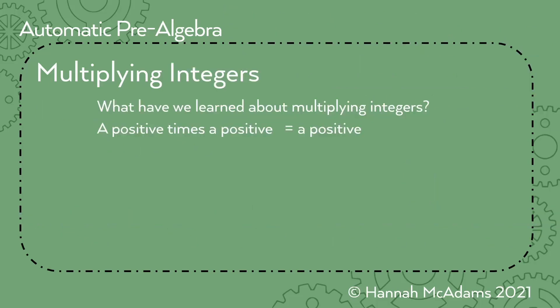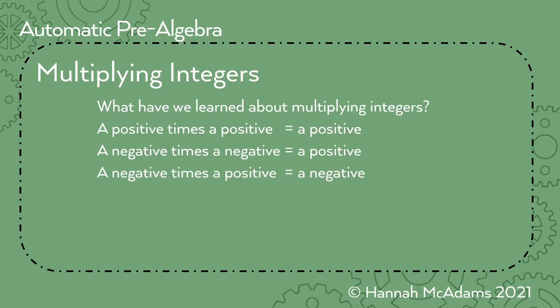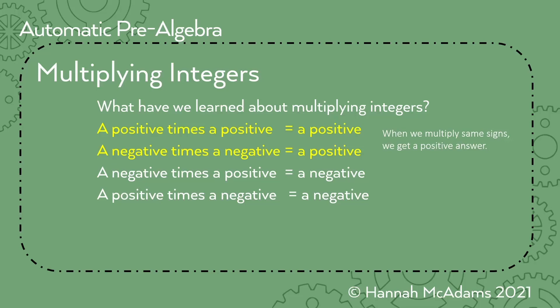What have we learned about multiplying integers? A positive times a positive equals a positive number. A negative times a negative equals a positive number — remember the robot facing but moonwalking. A negative times a positive is a negative, and a positive times a negative is a negative. So the shortcut: same signs equal positive — when we multiply same signs, we get a positive answer. And when we multiply different signs, we get a negative answer.